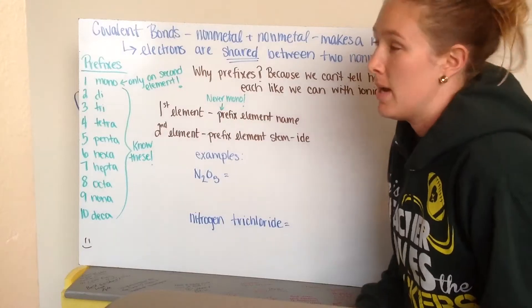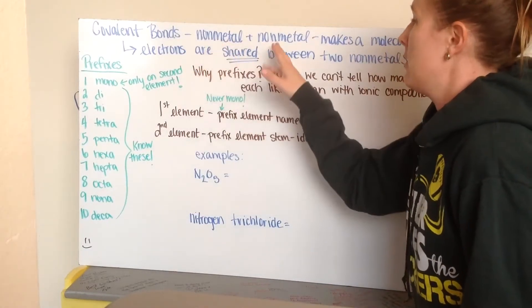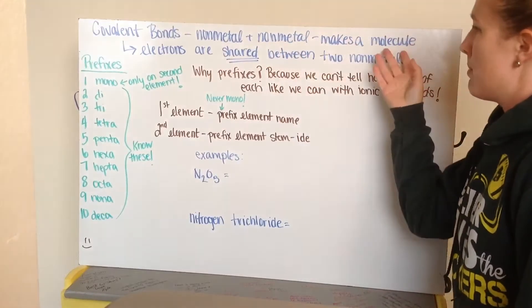This video is on covalent bonds. Covalent bonds is a bond between a non-metal and a non-metal. These are going to make molecules.